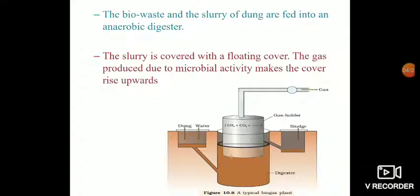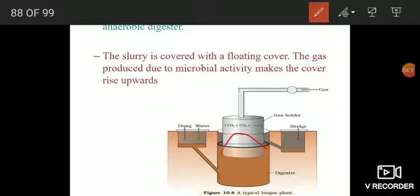Now we can also see how a biogas plant operates. The bio waste and the slurry of dung are fed into an anaerobic digester. I have already told you this is the anaerobic digester. The slurry, which is actually the liquefied form of dung, is covered with a floating cover.